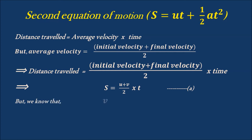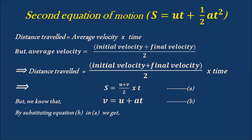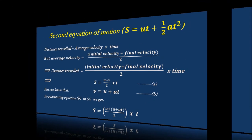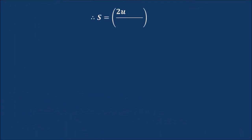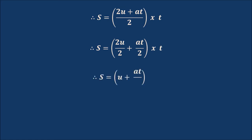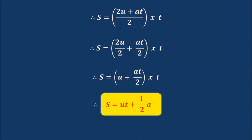But we know that V is equal to U plus AT — let it be equation B. By substituting equation B in equation A, we get S equal to U plus U plus AT, by 2, into T. Therefore S equal to 2U plus AT by 2, into T. Therefore S equal to 2U by 2 plus AT by 2, into T. Therefore S equal to U plus AT by 2, into T. Therefore by simplifying the expression we get S equal to UT plus half AT square. This equation is called the second equation of motion.